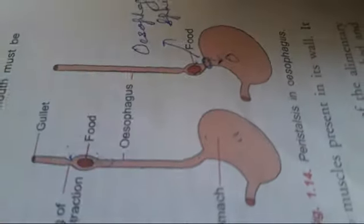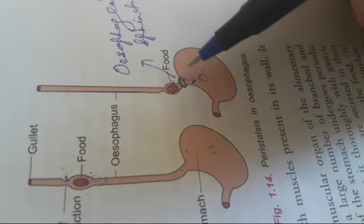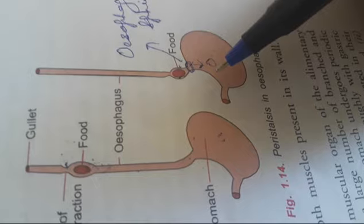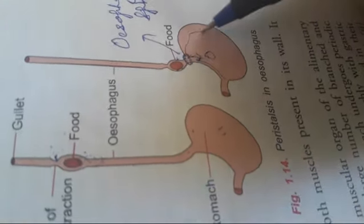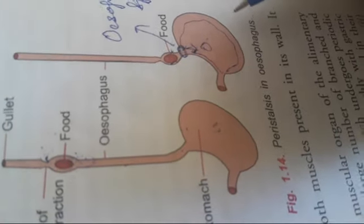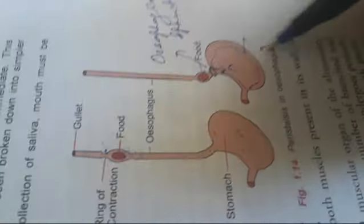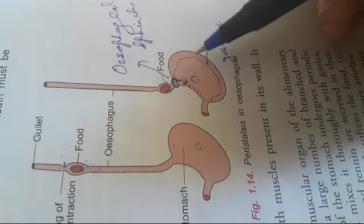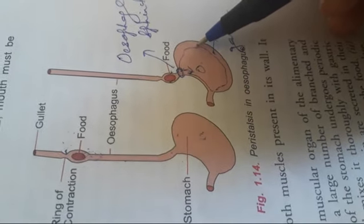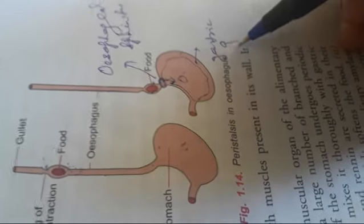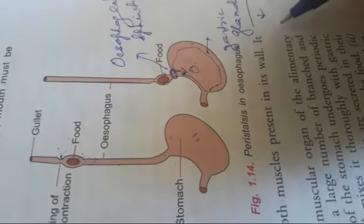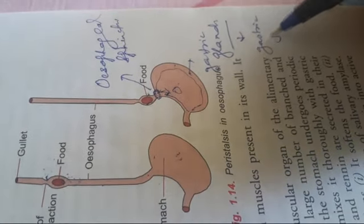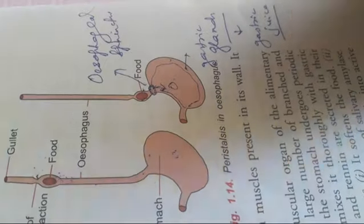Once food has reached the stomach, its involuntary muscles contract and relax powerfully, causing the food to be thoroughly churned. The inner wall of the stomach has many glands called gastric glands, which release a juice called gastric juice.